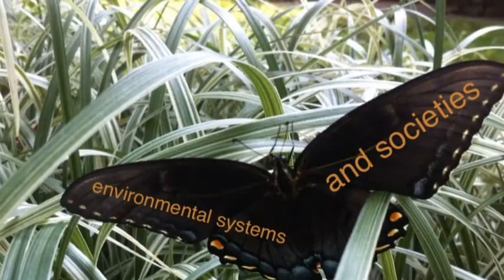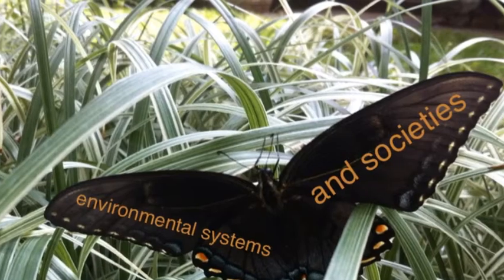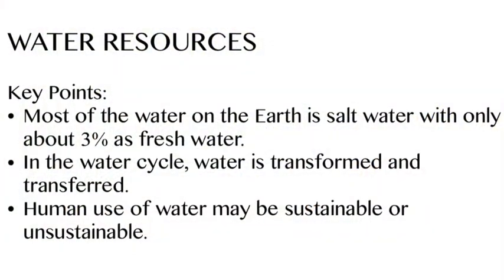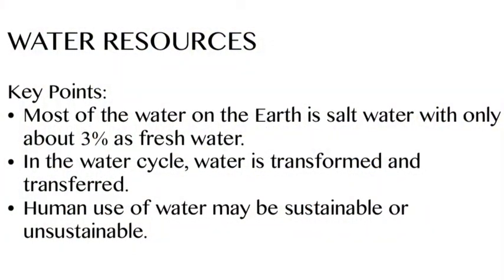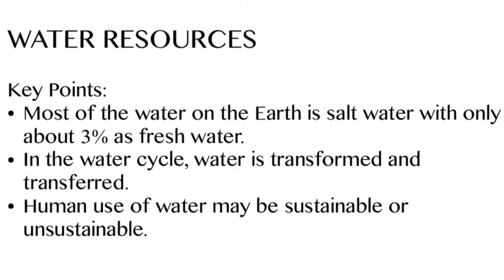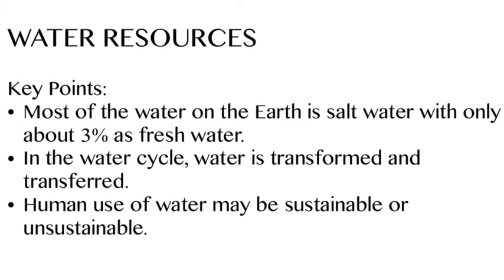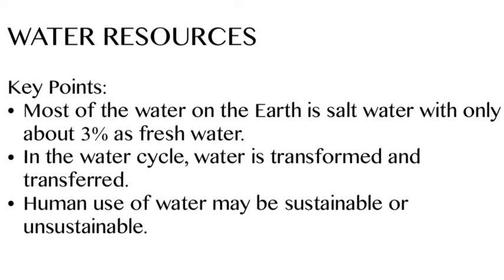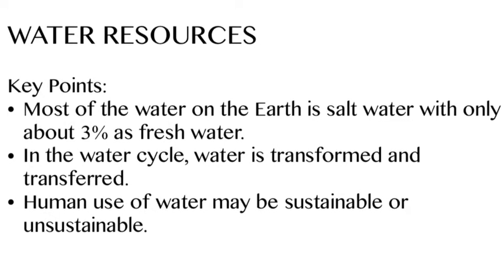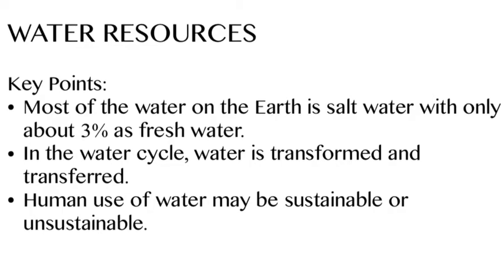Hello nature lovers and welcome to another exciting episode of Environmental Systems and Societies. Today's episode is all about water resources. We're going to learn that very little of the water on Earth is freshwater, that freshwater is transformed and transferred around the planet, and that the way humans use it may or may not be sustainable.